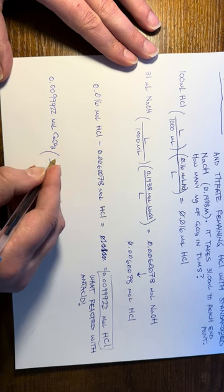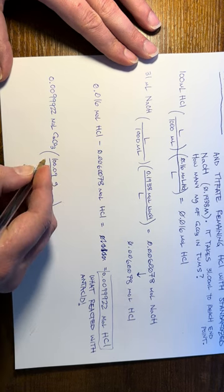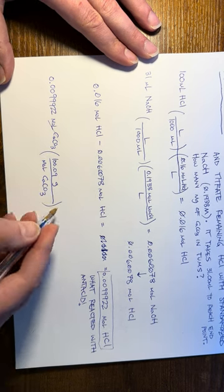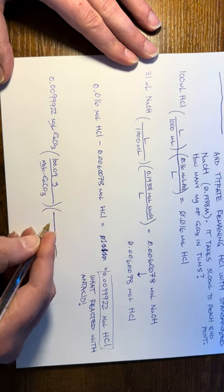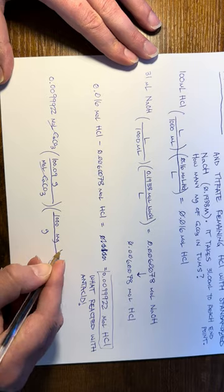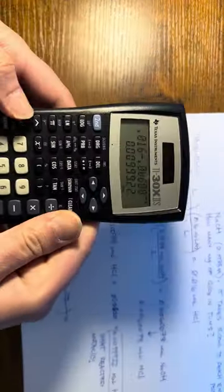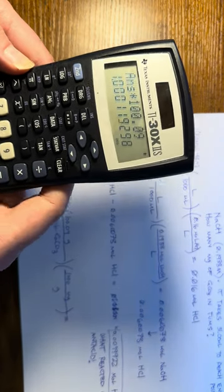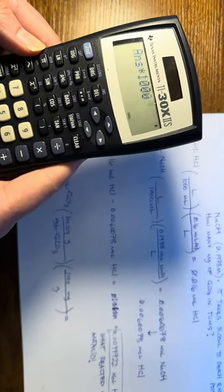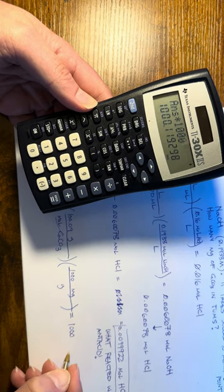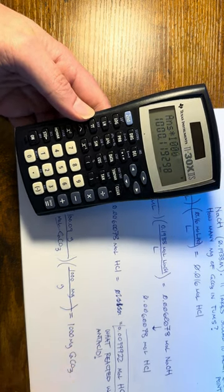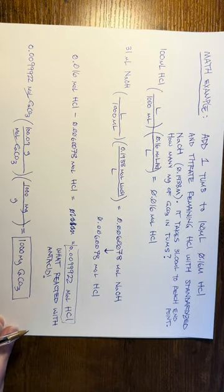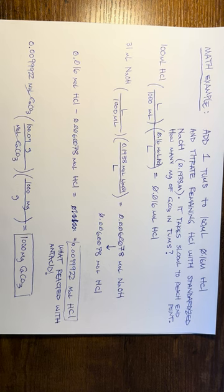We take 0.00999 moles of calcium carbonate and multiply by its molar mass of 100.09 grams per mole. Since the question asks for milligrams, we convert: 0.00999 moles × 100.09 g/mol × 1000 mg/g gives approximately 1000 milligrams of calcium carbonate. So there was 1000 mg of calcium carbonate in the one Tums tablet that we ground up and reacted. We'll do the same math with the milk of magnesia.